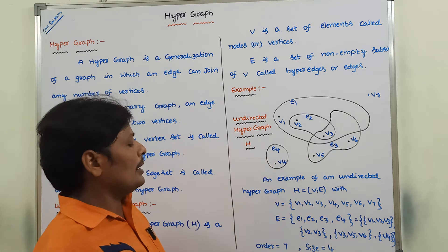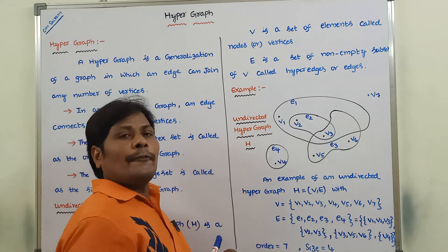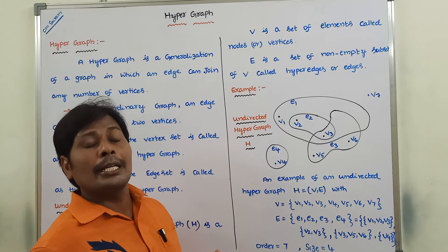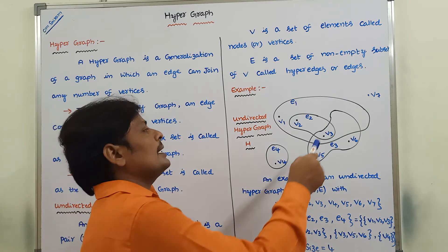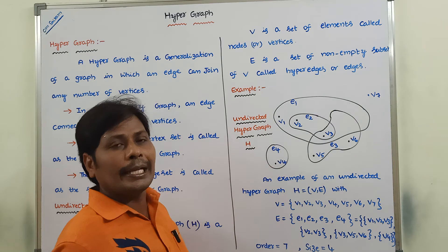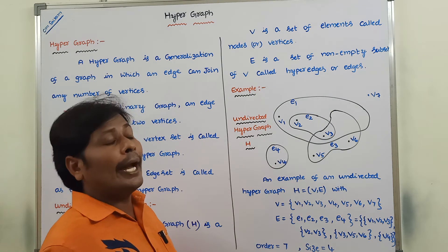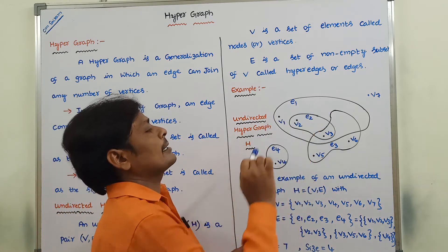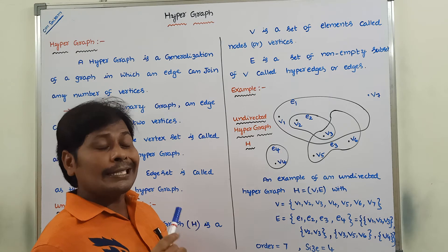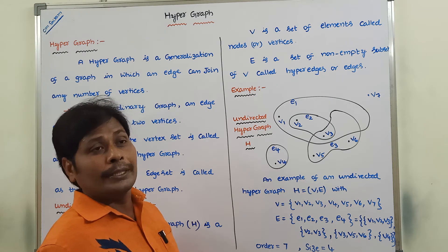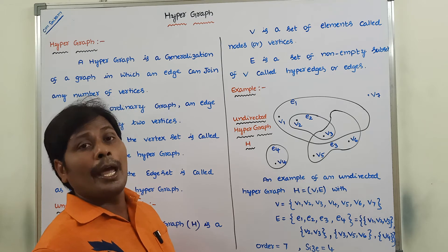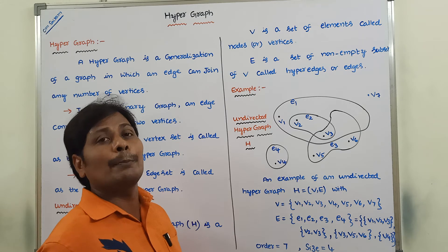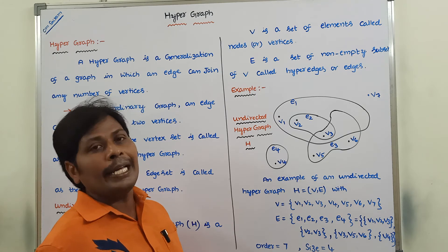There are two types of hypergraphs. The first is a directed hypergraph, and the second is an undirected hypergraph. In an undirected hypergraph, every edge is not directed. In a directed hypergraph, every edge is directed.